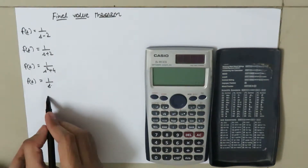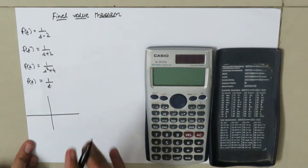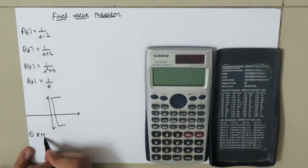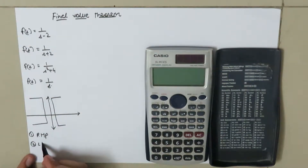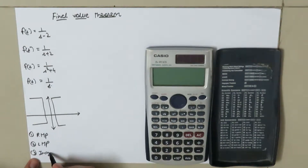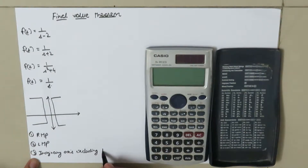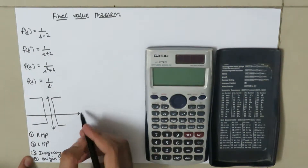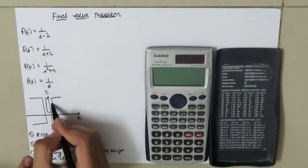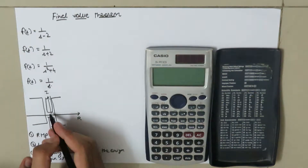We can divide the s-plane graph into four parts: the first part is the right half plane, the second part is the left half plane, the third part is the imaginary axis excluding the origin, and the fourth part is the origin itself.